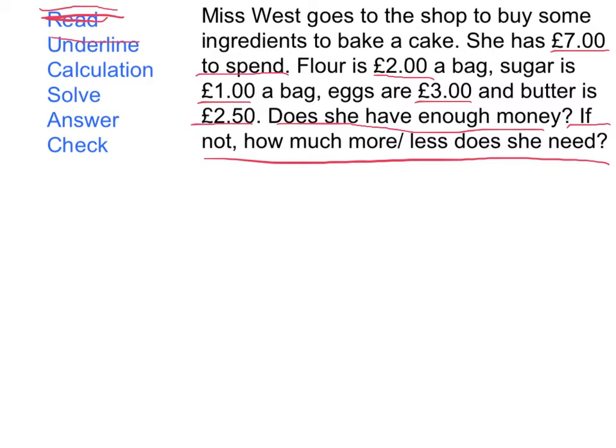Now we've underlined all of our key information, we need to work out what calculation we need to do. Firstly, we will need an addition calculation just to add up all of the money. Then we need to find out if she has enough money, and then we might be taking away or we might be adding — I'm not sure because we haven't got that far yet. So now we've decided what the calculation is, we just need to solve it.